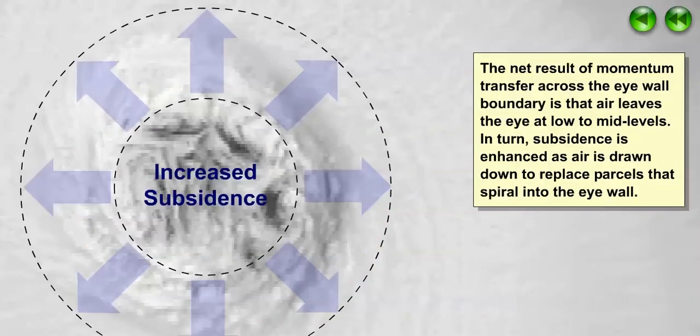The end result of momentum transfer across the eye wall boundary is that air leaves the eye at low to mid levels. In turn, this increases subsidence as air is drawn down to replace parcels that spiral into the eye wall.